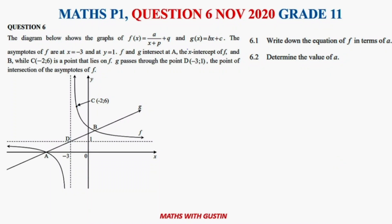Welcome everybody to Question 6, November 2020 Grade 11. It was a function question where we were given a straight line and also a hyperbola. The diagram below shows the graph of f(x), which is a hyperbola — this is just a general equation. We already know these are the lines of asymptotes.